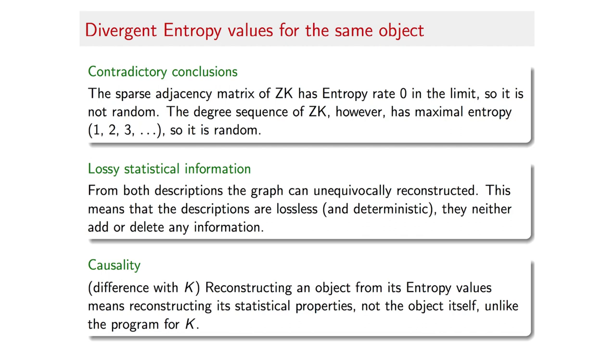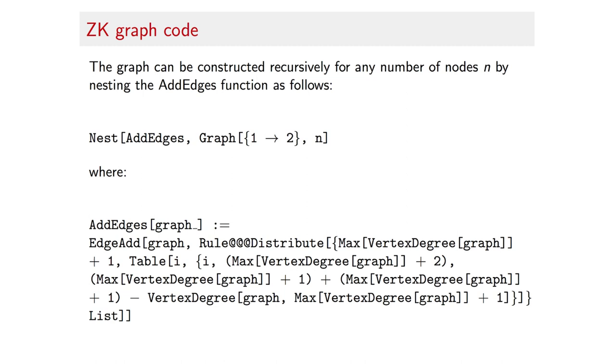This helps see how you can choose an arbitrary feature of a graph when it comes to assign it an entropy value, and how this is different to algorithmic complexity that is actually invariant to object description and also actually considers the generating mechanism based on computer programs before making a call.